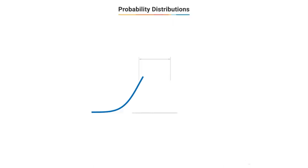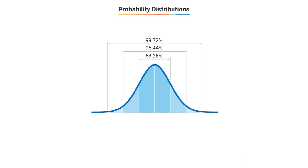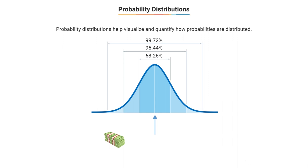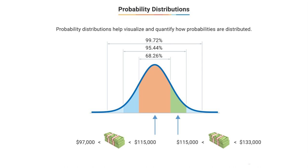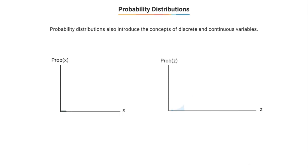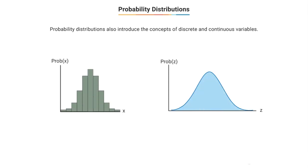All of these building blocks will help us move on to the next building block, which is probability distributions. Probability distributions, as the name implies, help us visualize and quantify how probabilities are distributed across the range of possible values. For example, what is the probability that a data scientist earns between $97,000 and $115,000? Even though both a $97,000–$115,000 interval and a $115,000–$133,000 interval are about $18,000 long, the probability differs because of how probabilities are distributed. We will deep dive into concepts of discrete and continuous variables.